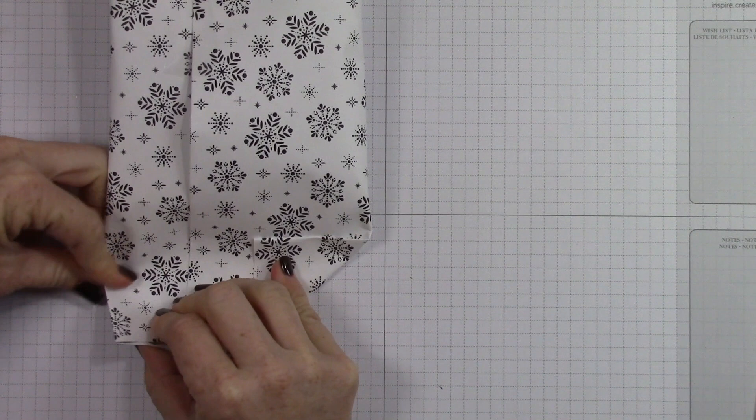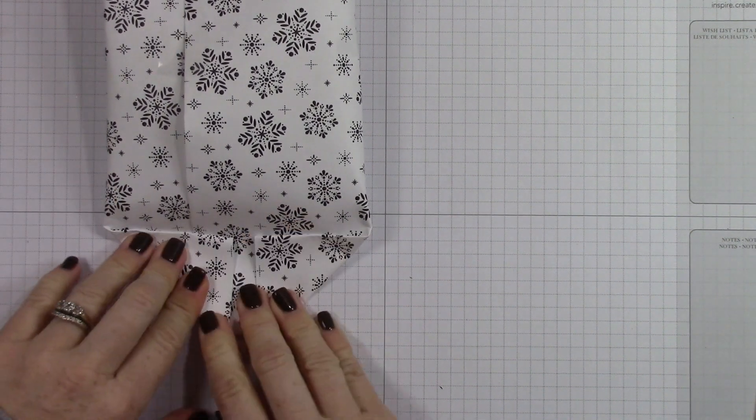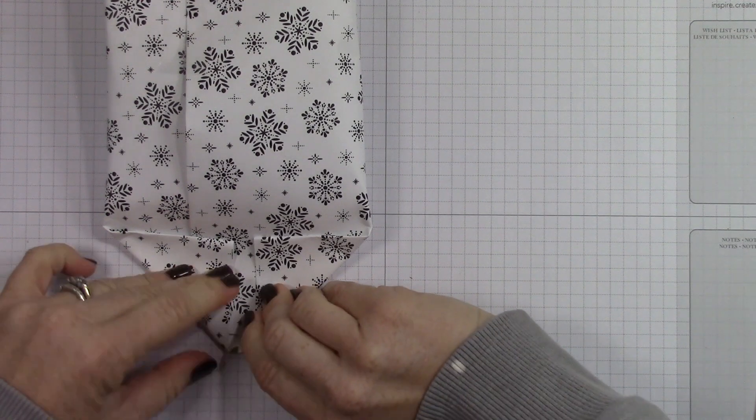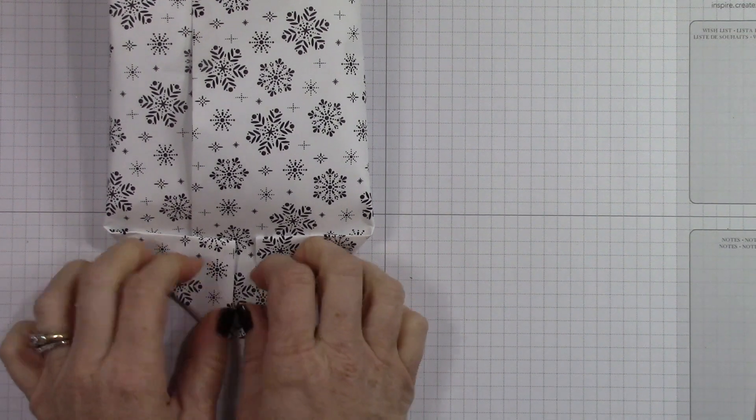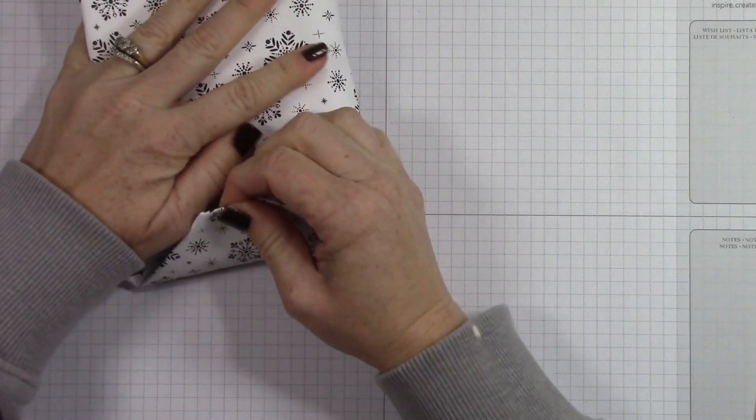The other fun thing that you could do with designer series paper because it's thick is you could wrap this gift like I'm doing right now and instead of putting it in a box, this paper would be strong enough to go through the mail. So you could put a label on the front of this and just maybe use a little more packing tape.